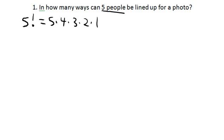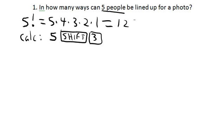But it's also true that you have a factorial button on your calculator. We're using the Casio FX-260. On that calculator, it's shift three that produces the factorial. So you would enter the five, then you would press the shift key, followed by the three key, and that will produce five times four times three times two times one, which is 120. So there are 120 ways that five people can be lined up for a photo.